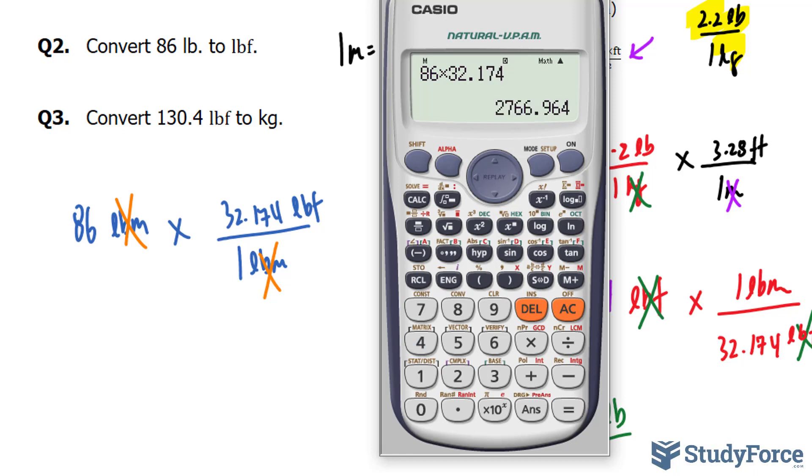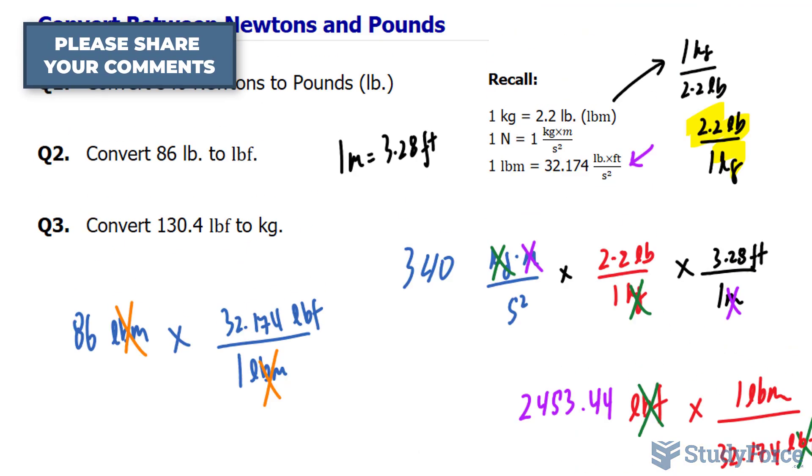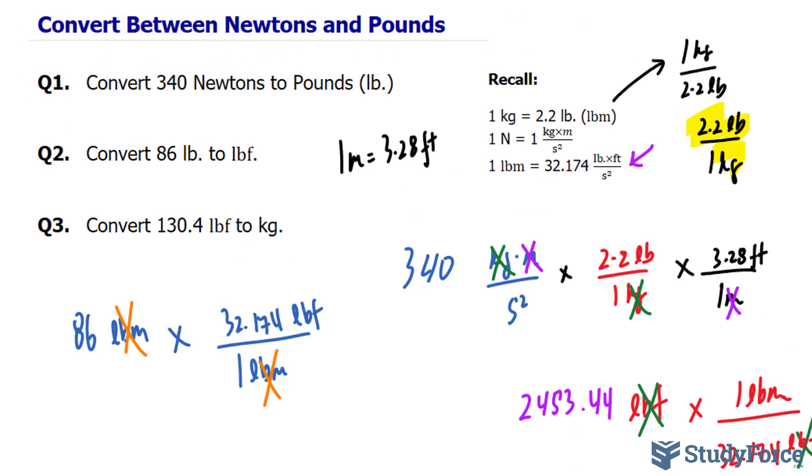And that is the value in pound foot per meter squared. If you would like to see the answer to question number three, which is a little more complicated, we go from 130.4 LBF to kilograms and only kilograms, not kilograms times meters per second squared, leave a comment below and we'll gladly upload that video.